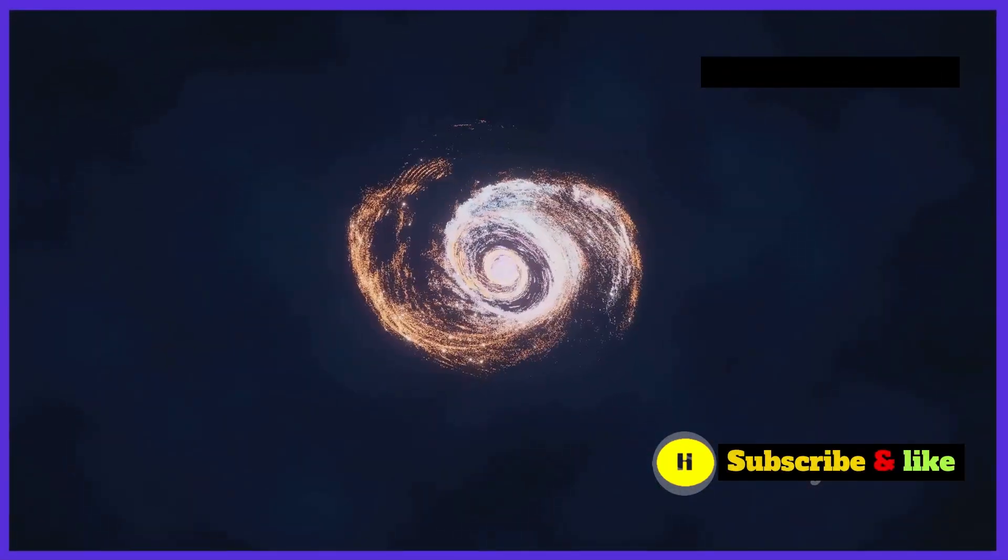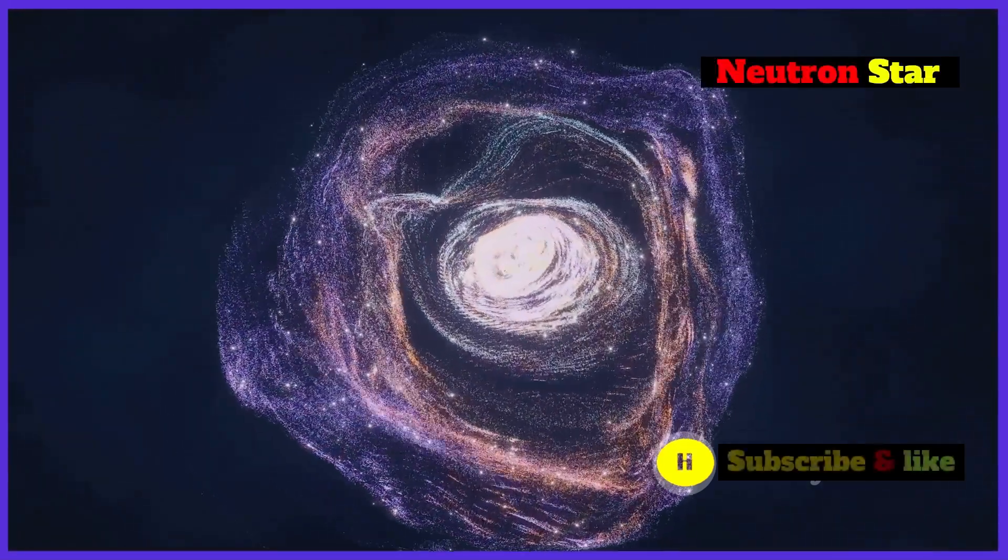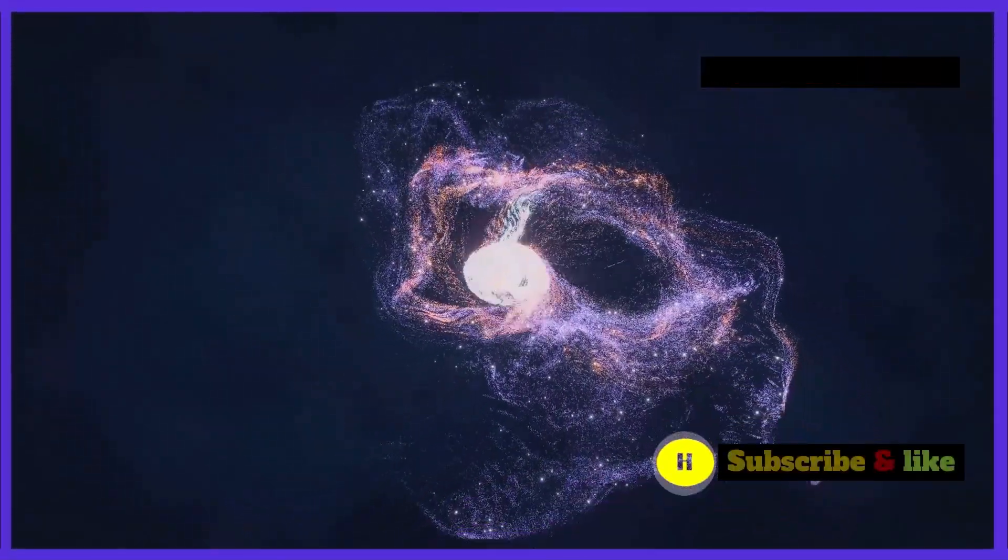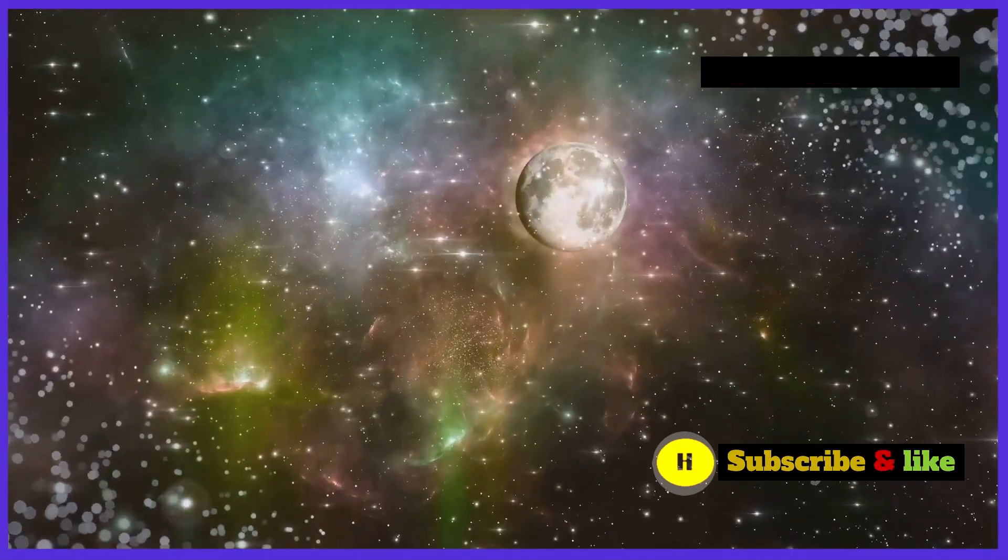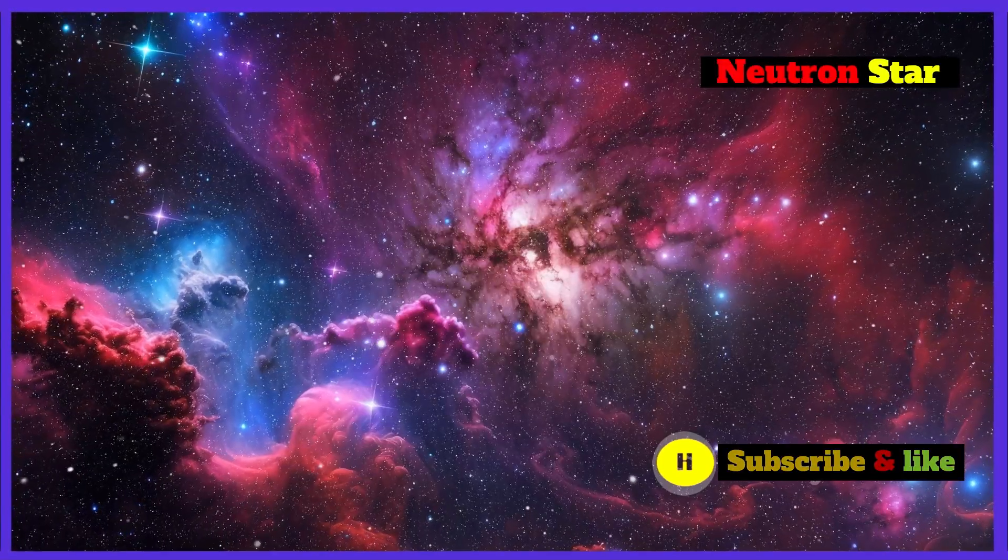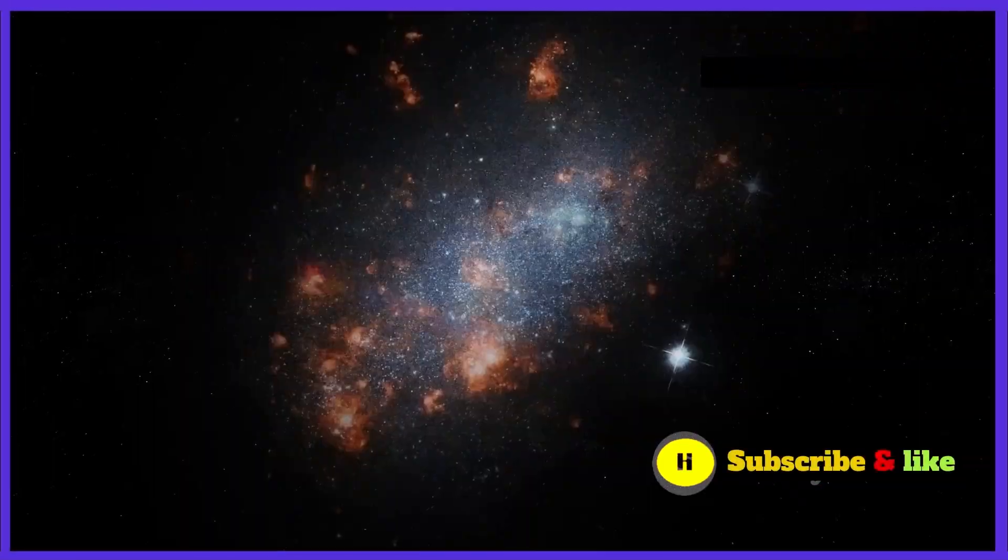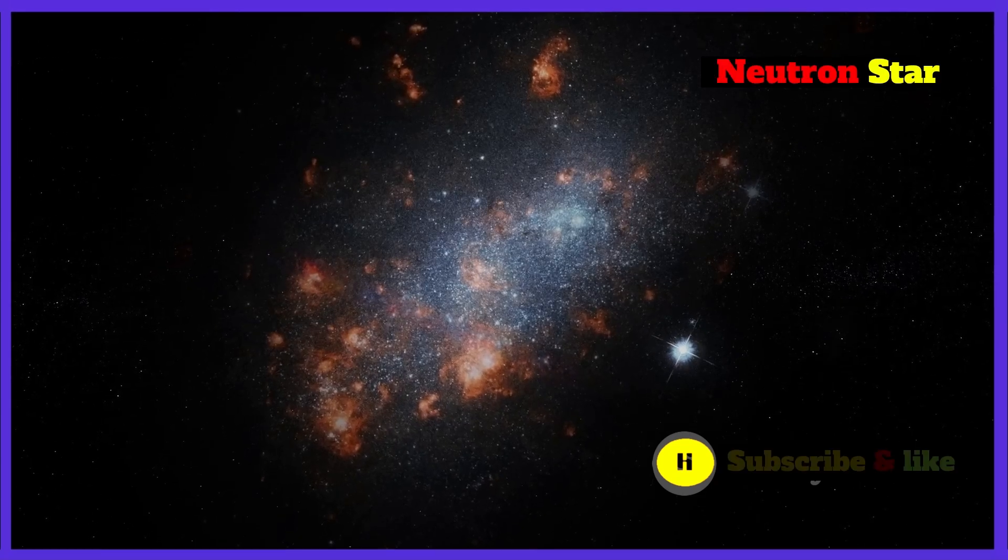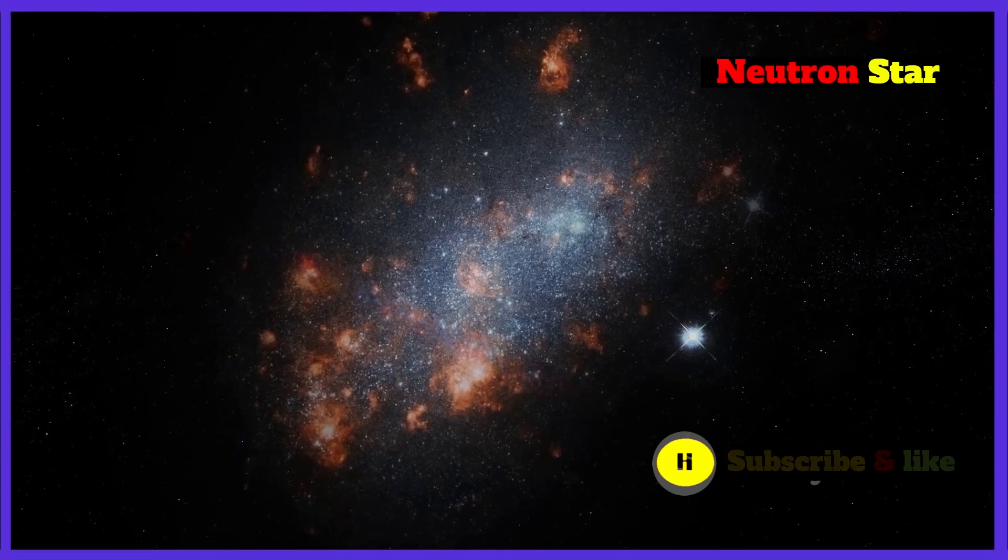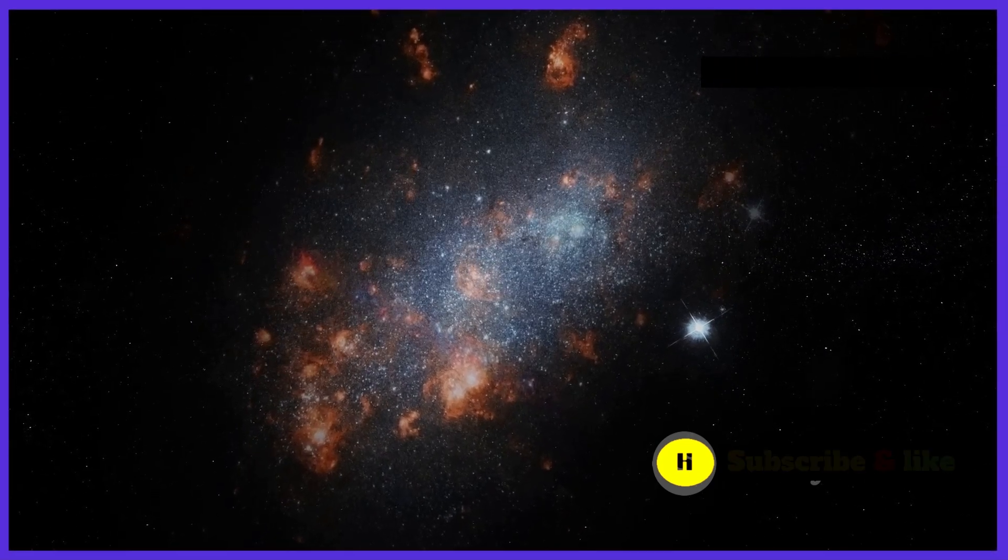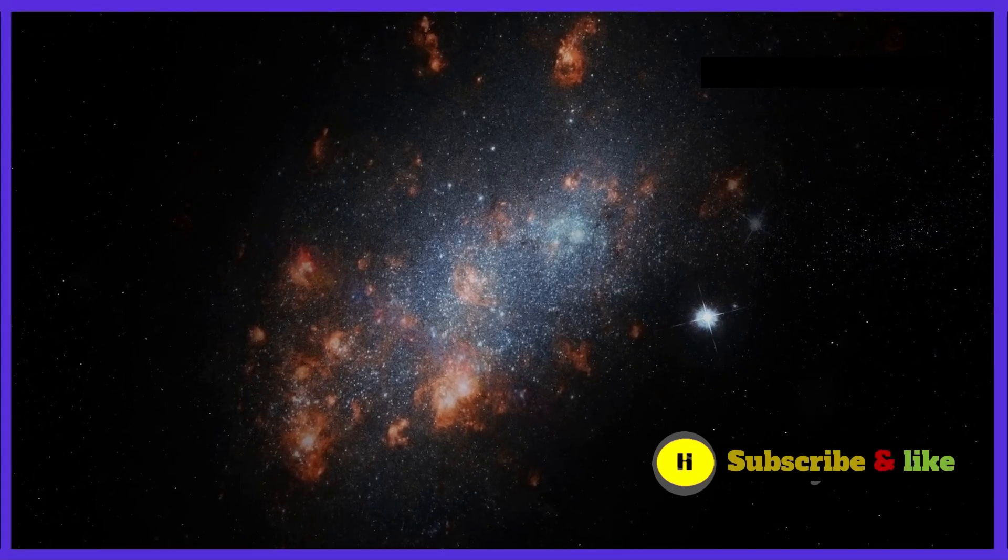This extreme density creates intense gravitational and magnetic fields. These fields are so strong that they can affect the space-time around the neutron star. One type of neutron star called a magnetar has a magnetic field thousands of times stronger than a typical neutron star. These magnetic fields are the strongest known in the universe. These powerful magnets are capable of releasing enormous bursts of energy, making them a prime candidate for FRB sources. When the magnetic field of a magnetar becomes unstable, it can release a tremendous amount of energy in the form of an FRB.